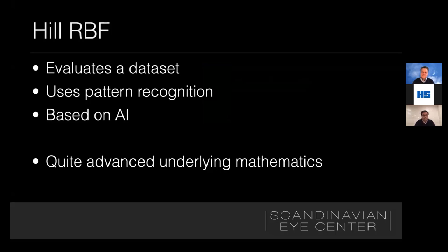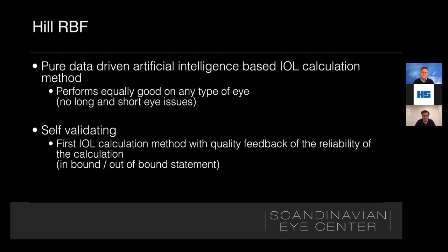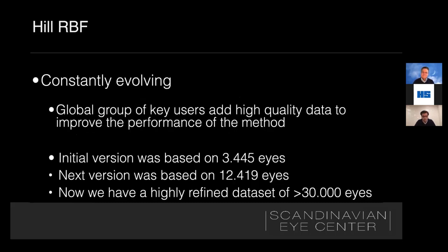So the Hill RBF — as you've heard, there's some quite advanced underlying mathematics. I have to admit, even though Warren has tried to explain these things in detail, I haven't fully understood everything. But to borrow a point from Mike Snyder: do you really need to know the intricate details of a combustion motor to enjoy driving a car? I think not — and that's the same thing with the Hill RBF. As long as it drives and you're enjoying it, that's what you need. This is a calculation method, not a formula — purely data-driven by artificial intelligence. It's self-validating, and it's the first method with quality feedback on the reliability of the calculation, with the inbounds and out-of-bounds statements. It's constantly evolving, which is one of the key things I really love about this method.